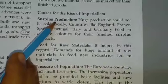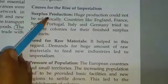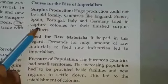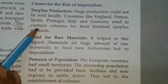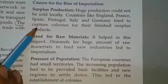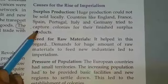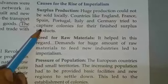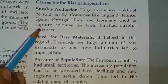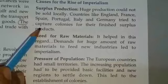Causes for the rise of imperialism. First, surplus production: huge production could not be sold locally. Countries like England, France, Spain, Portugal, Italy and Germany tried to capture colonies for their finished surplus products.